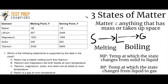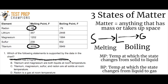With that context, let's turn to the question and solve it by process of elimination. Starting with answer A: radon has a higher melting point than titanium. We look at radon's melting point — it's negative 96 — and compare that to titanium's melting point of 3038. Titanium's 3038 is a higher melting point, so answer A is false. Radon has a significantly lower melting point, so I'm crossing A off.